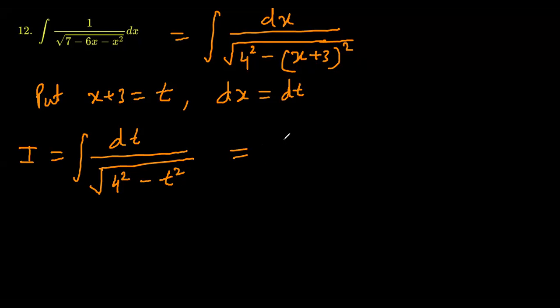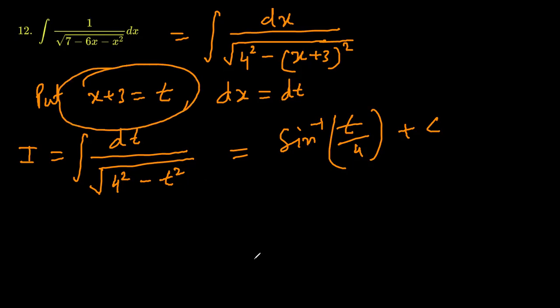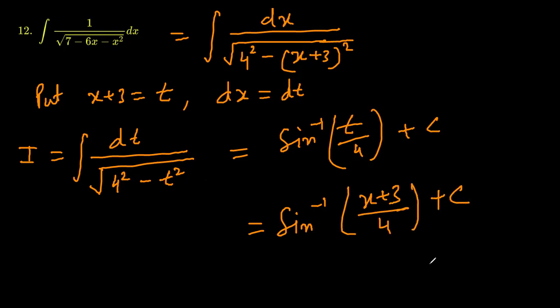a squared minus x squared is sin inverse t over a. It is sin inverse of t over a, where a is 4, so sin inverse of t by 4 plus c. We would like to retain the value of t, so our answer is going to look like sin inverse of x plus 3 divided by 4 plus c. I think we are done.